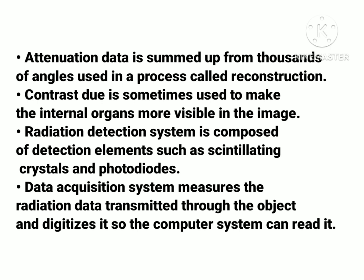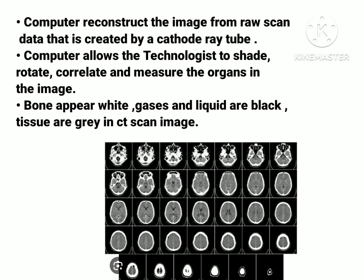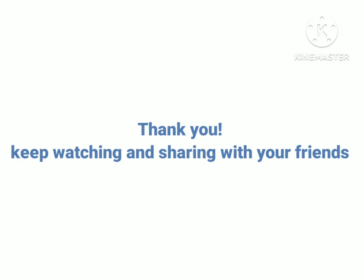In CT scan, radiation detectors are composed of detection elements such as scintillating crystals and photodiodes. The computer reconstructs the image from raw scan data created by the cathode ray tube. Computers allow the technology to shade, rotate, and measure organs in the image. In a CT image, bone appears white, gas and liquids are black in color, and tissues are gray in color.